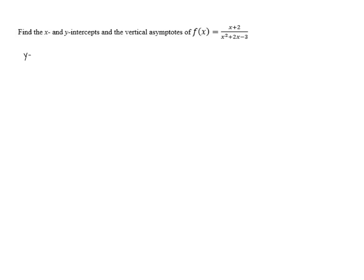To find the y-intercept, we evaluate the function when x equals 0. When we do that, notice that all of the terms that aren't constants become 0 because 0 is 0, 0 squared is 0, and 2 times 0 is 0. So all we're left with is 2 in the numerator and negative 3 in the denominator.